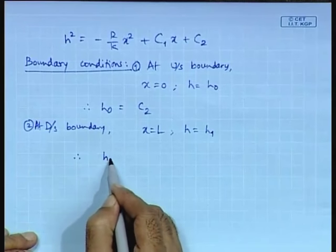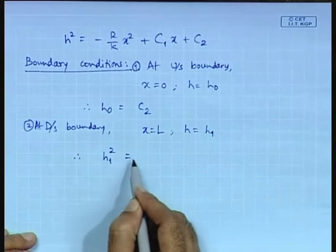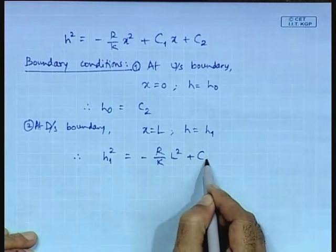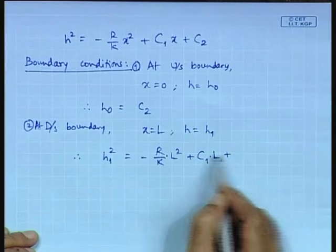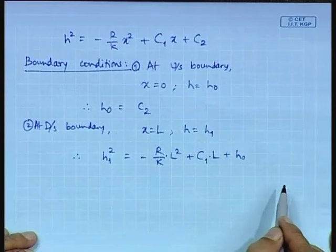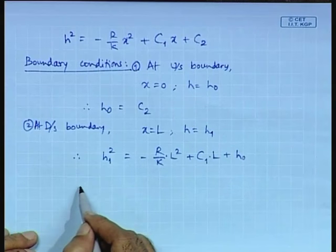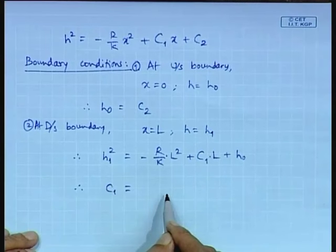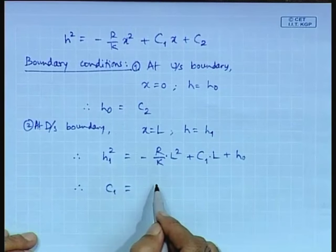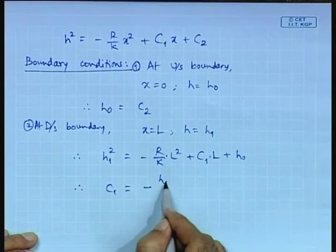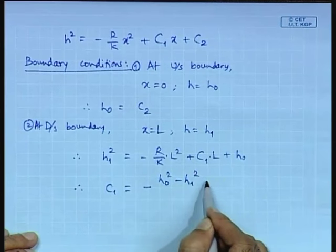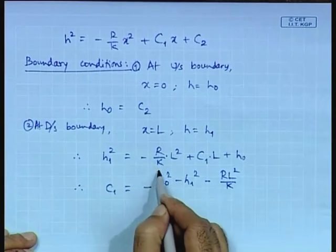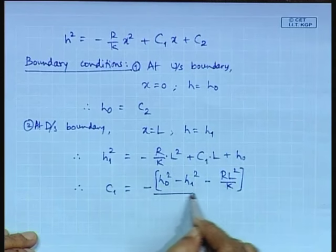Substituting the downstream boundary condition, h₁² = -(R/K)L² + C₁L + h₀². Therefore C₁ = [h₀² - h₁² - (R/K)L²] / L, after rearranging and simplifying.